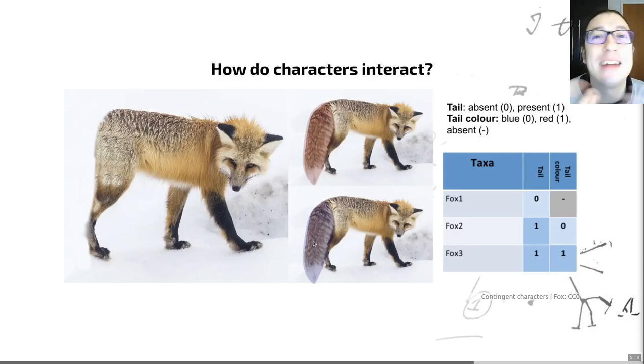Or is it better to what we call atomize the character to say tail is absent or present? And then for those organisms that have a tail to code its color? And it turns out there's been quite a lot of research on this in the last 10 or 15 years. The best way is to try and split up our characters as well as possible and do what you can see on this slide here, which is code for the absence or the presence of a tail. And then in those organisms that have a tail code for the color. And those organisms that don't have a tail, we code that as inapplicable, creating a contingent character. This tail color character is contingent upon having a tail.